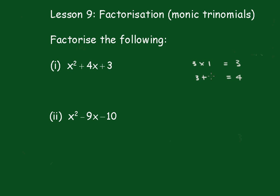It's a good idea to write this down so you double-check this: 3 times 1 is 3, 3 plus 1 is 4, we know we're right. So all we have to do now is write down (x + 3)(x + 1).